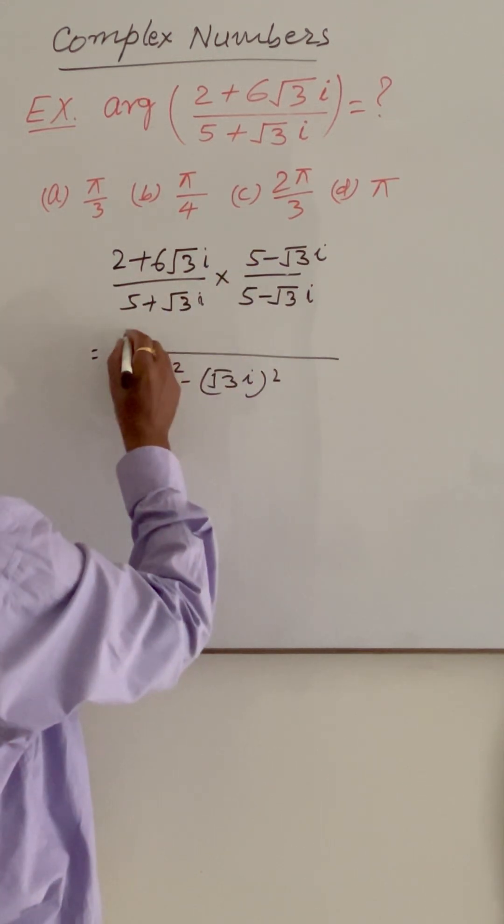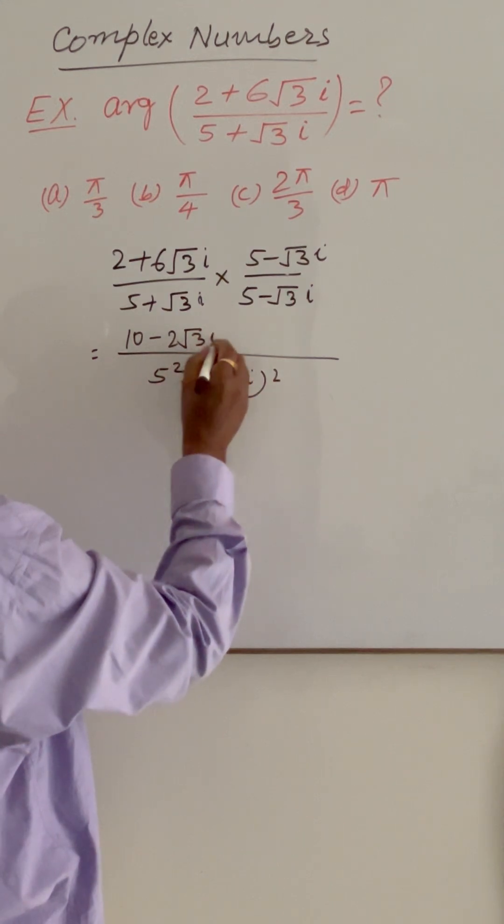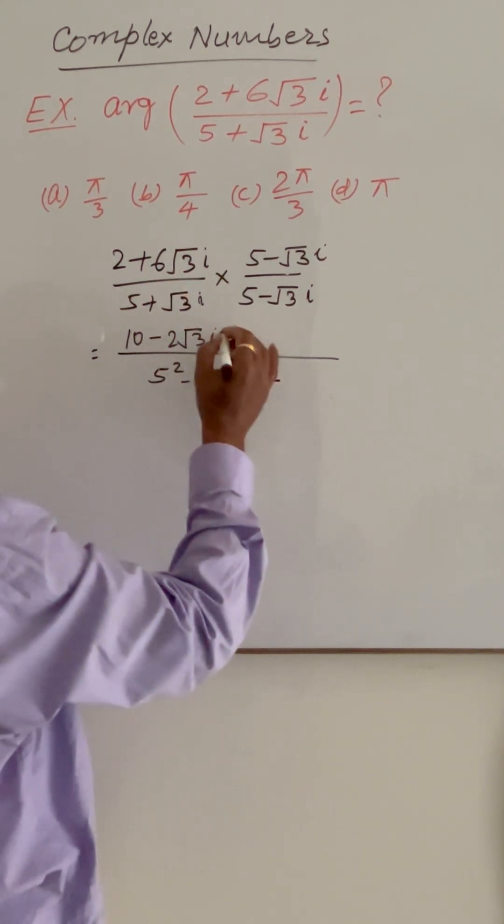So 2 into this much is 10 minus 2 root 3 into i. Multiplying with 6 root 3i.